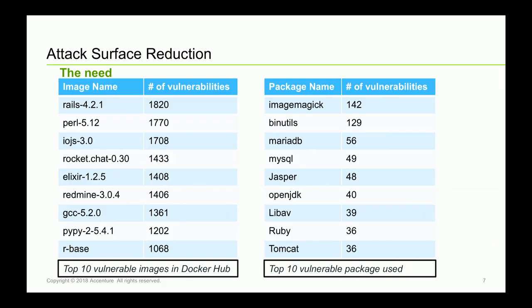We actually looked at and analyzed Docker repositories. We pulled all container images across versions since the inception of Docker Hub and pulled statistics out of it. On the left-hand side you can see the top ten most vulnerable packages — some have literally thousands of vulnerabilities. If a lazy or careless developer just pulls some images and runs them in production, you're going to inherit the cost of managing, fixing, patching, or containing all those vulnerabilities.